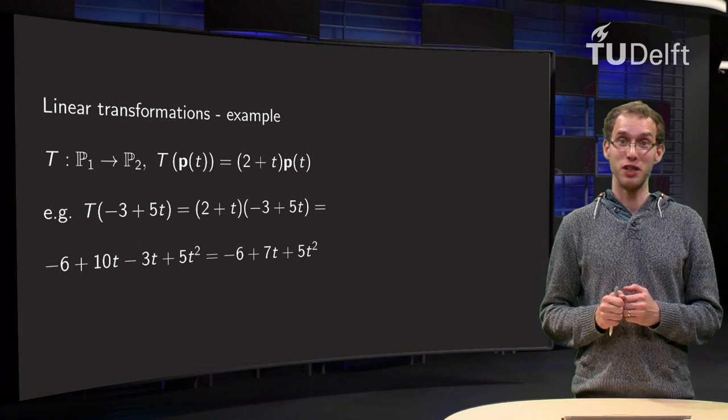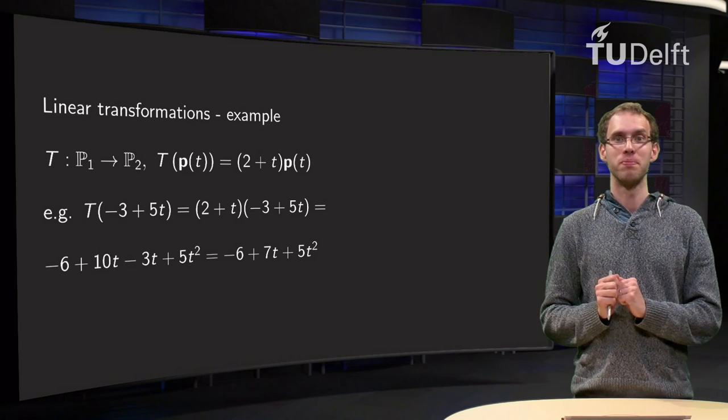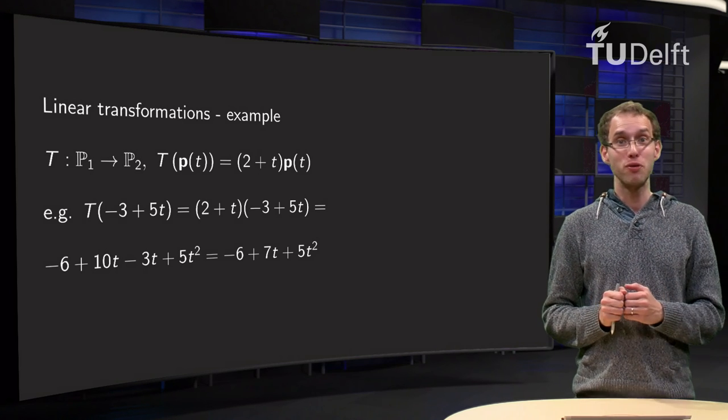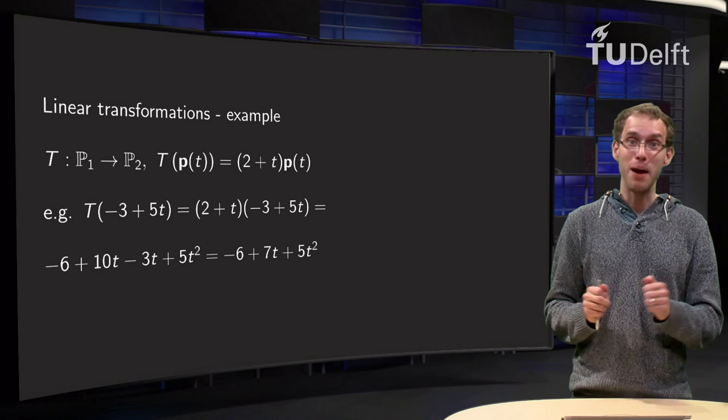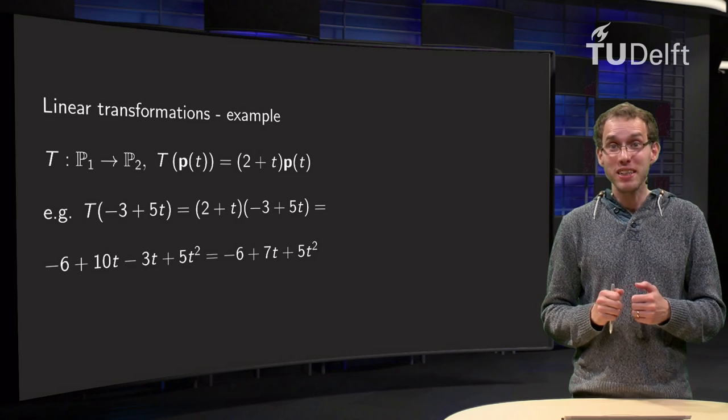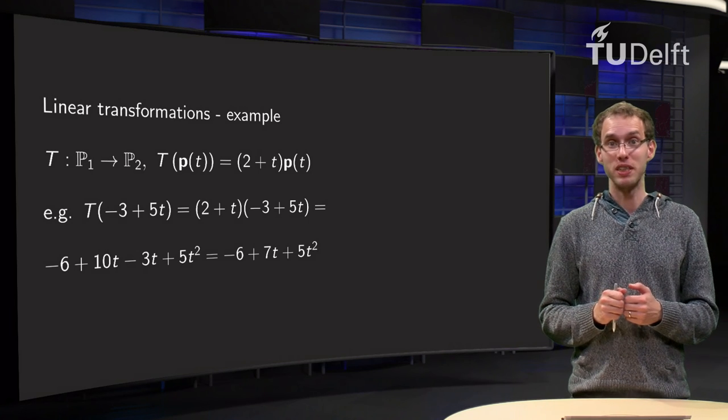How can we determine whether a transformation is linear or not? If the transformation is from Rn to Rm, we can try to find a matrix which implements the transformation.